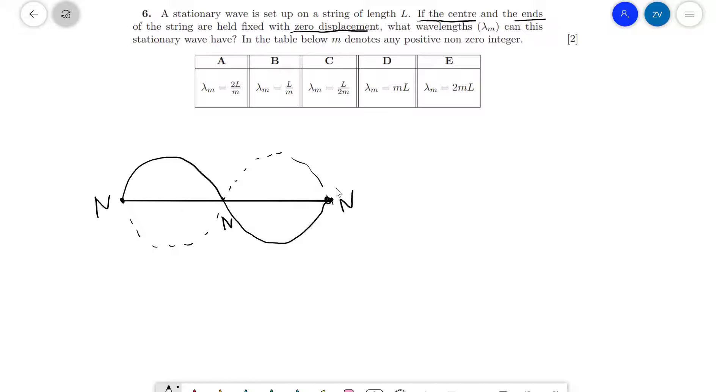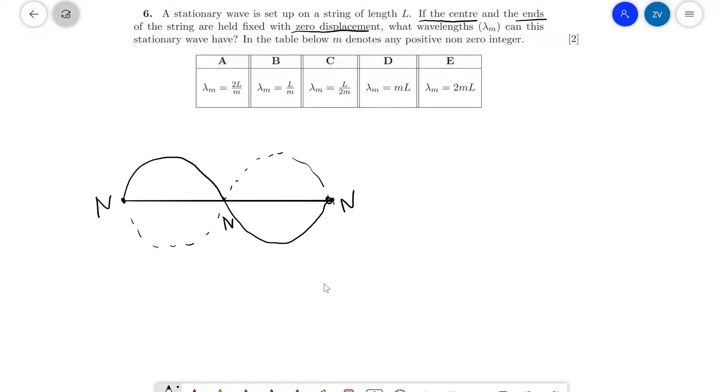The total length is basically the length from this end to this end. I'll just draw it like that to be absolutely clear. This here is L. So L is equal to lambda. Now because our equation is in terms of lambda, I'm going to write it as lambda equals L.